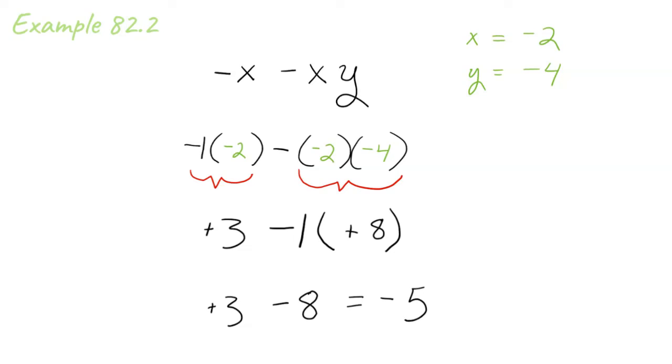Well, then we have the negative 2 times the negative 4 that gives us a positive 8, but we still have that negative in front of the positive. So negative times a positive gives us a negative 8. Positive 3 minus 8 equals negative 5.